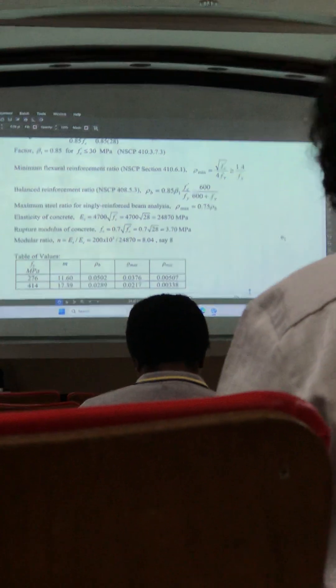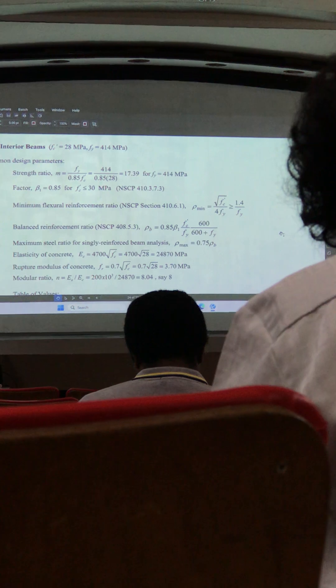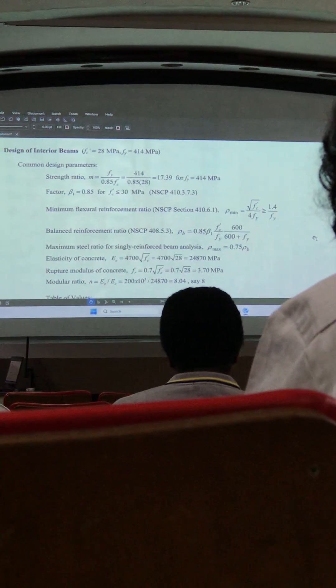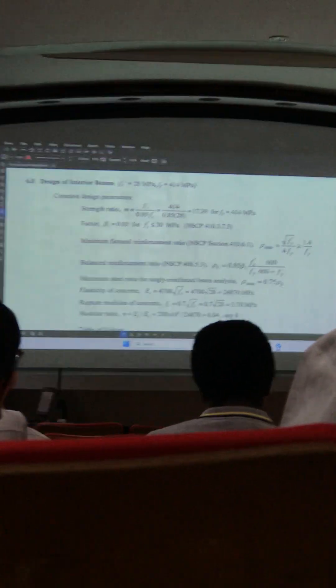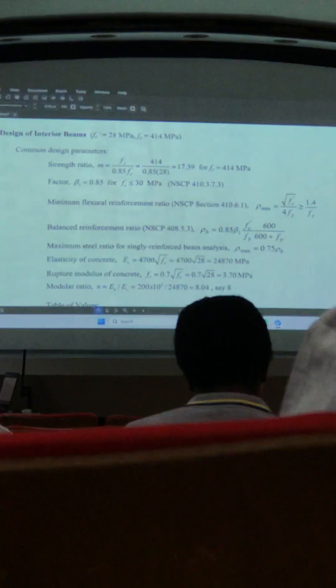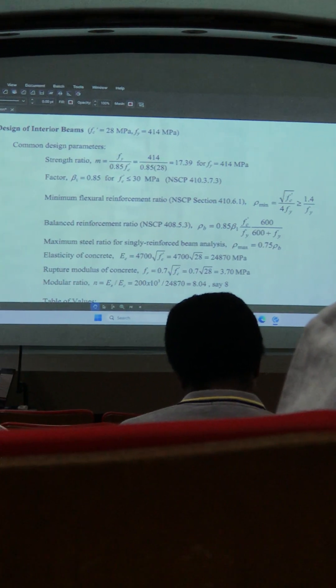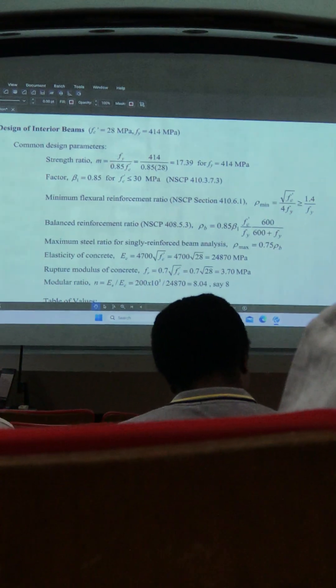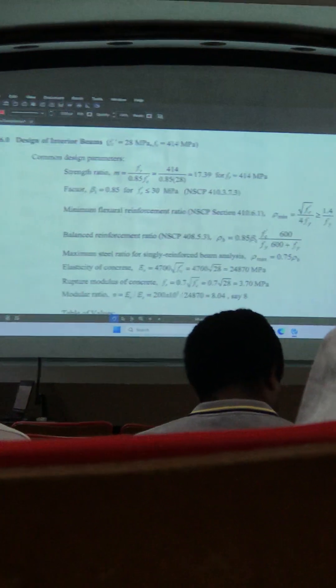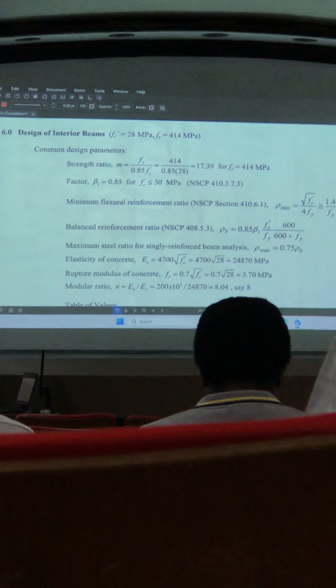So in our calculation, we begin with computing what we call the common design parameters. So this is the quantities which we always calculate for each beam. So at the same time, if we compute it, it is common for the beam.